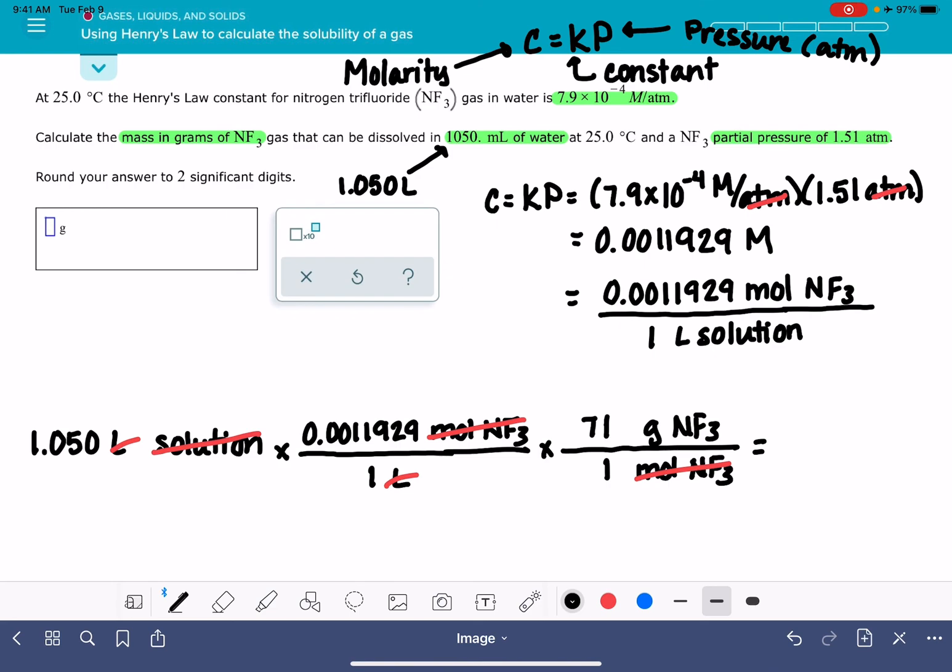1.05 times 0.0011929 times 71 is, to two significant figures, 0.089 grams.